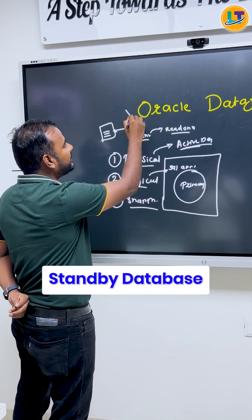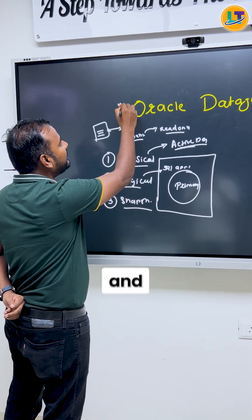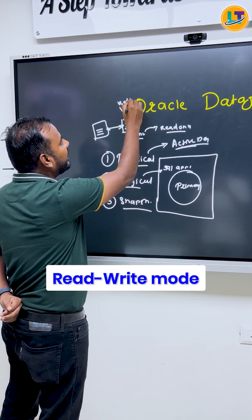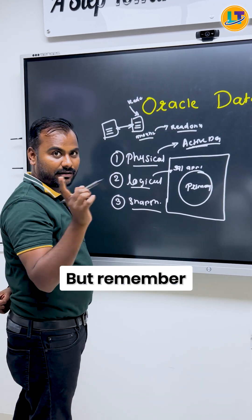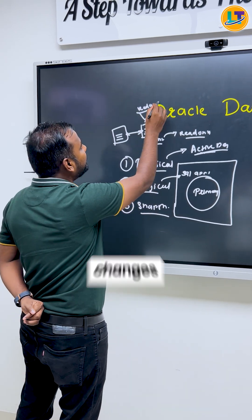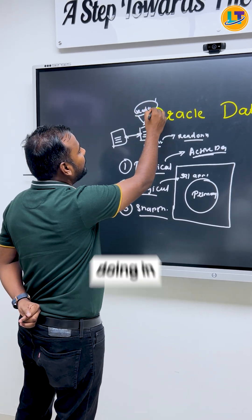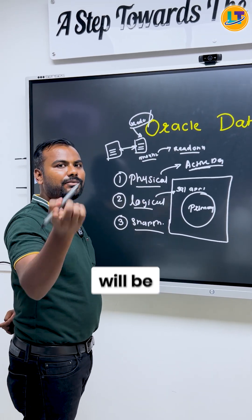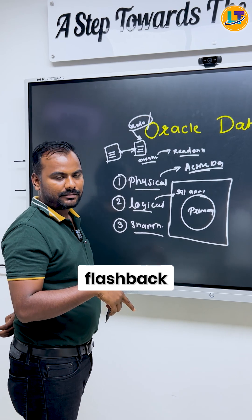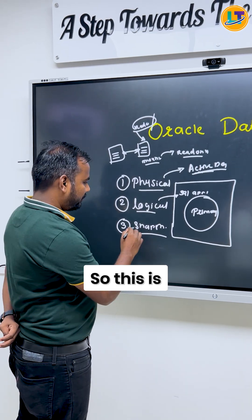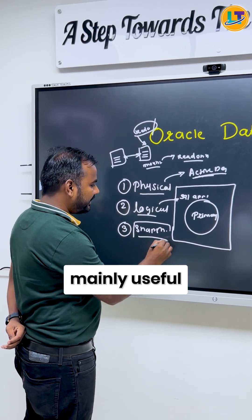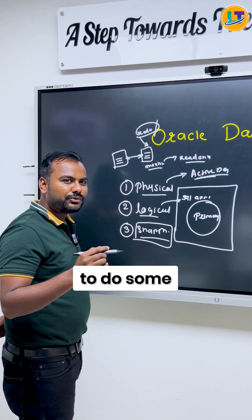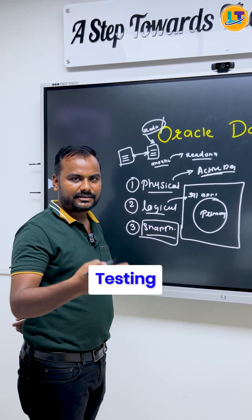The third one is the snapshot standby database. In a snapshot standby database, the standby can be opened in read-write mode, but remember that whatever changes you make in read-write mode will be flashbacked. This is mainly useful when you want to do some sort of testing.